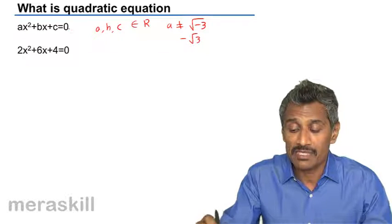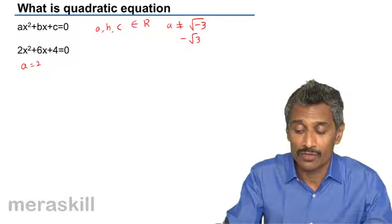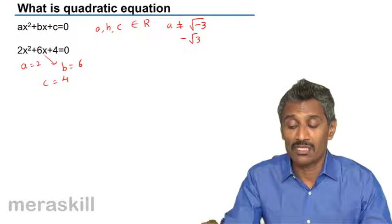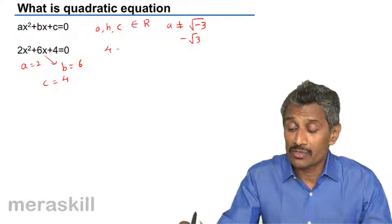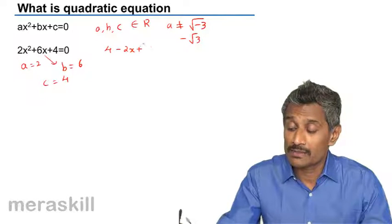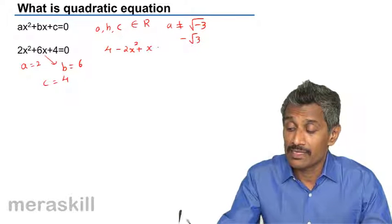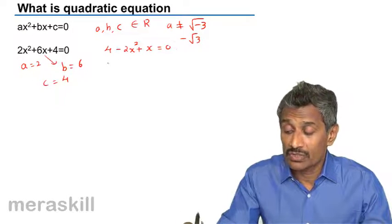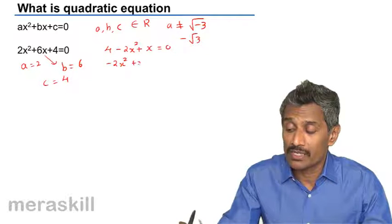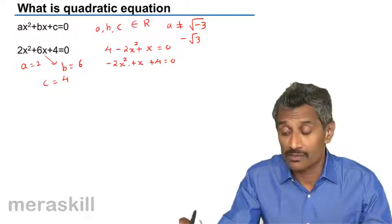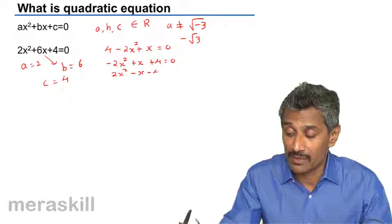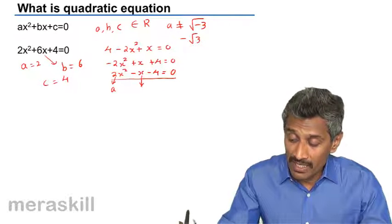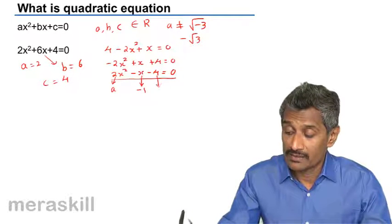Looking at AX squared plus BX plus C equals 0, here A is 2, B is 6, and C is 4. The values of A, B, and C must be very clear. Sometimes an equation may be given as 4 minus 2X plus 2X squared plus X equals 0, and you cannot take A as 4 — you need to rearrange it. Rearranging gives 2X squared minus X minus 4 equals 0. So this is a standard quadratic equation where A is 2, B is minus 1 (the coefficient of X), and C is minus 4.